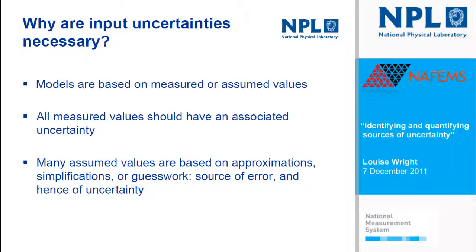The first real question is: why are input uncertainties necessary? There are two reasons. The first is that models are based on measurement values, and measurement values should all have an uncertainty associated with them due to natural variability. The second is that models are also based on assumed values. Whenever you create a model, you make simplifications, assumptions, and guesses about the way things might behave, and you need to take the uncertainty associated with that into account.